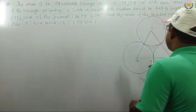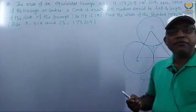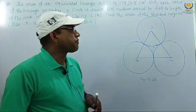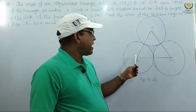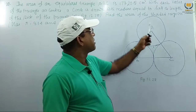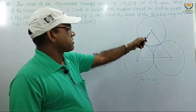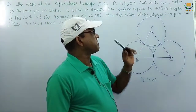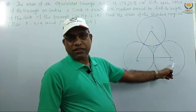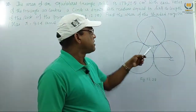This is an equilateral triangle. Equilateral means all sides are equal and all angles are equal. This equilateral triangle ABC has an area given as 17320.5 cm². With each vertex A, B, C — these are the vertices — we draw a circle.